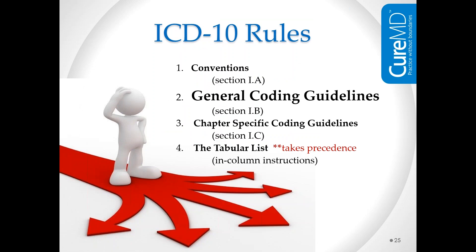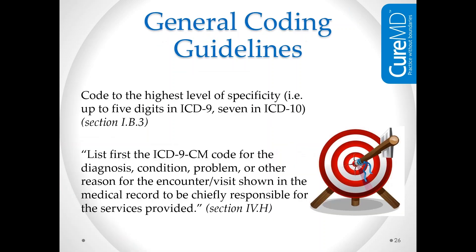Those are all the conventions I want to review with you. There are a few others — you might want to read Section 1A of the official guidelines. But those are the most important ones, and I've concentrated on the ones that will help 90% of you 90% of the time. Now the second level of rules is the general coding guidelines. Section 1B of the official guidelines contains general guidelines that apply to all the codes.